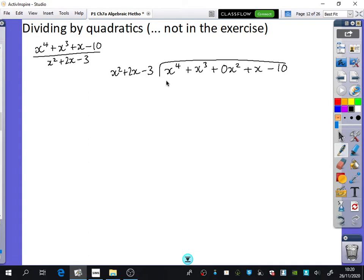So I'm going to have my x to the power of 4 plus x cubed plus 0x squared plus x minus 10, divided by x squared plus 2x minus 3. If this thing didn't have an x, you would have to put a 0x there as well. You've got x to the power of 4. You always concentrate on the highest powers. x to the power of 4 divided by x squared is x squared.